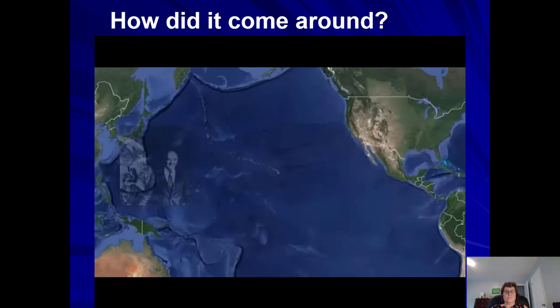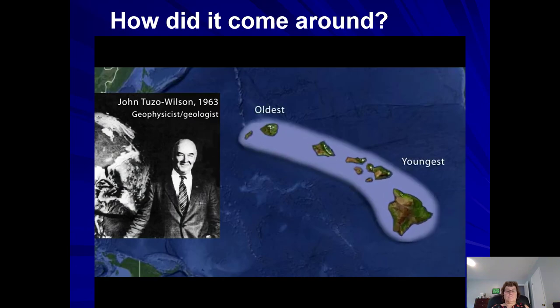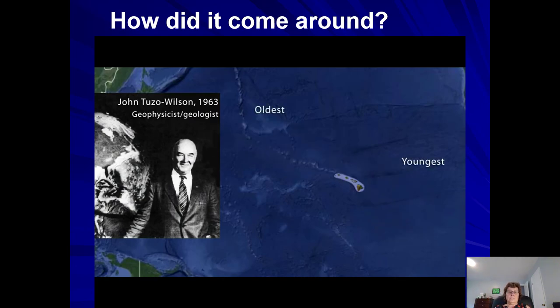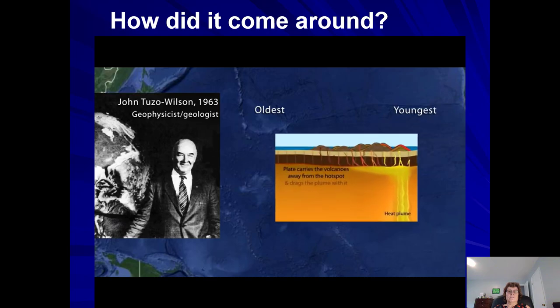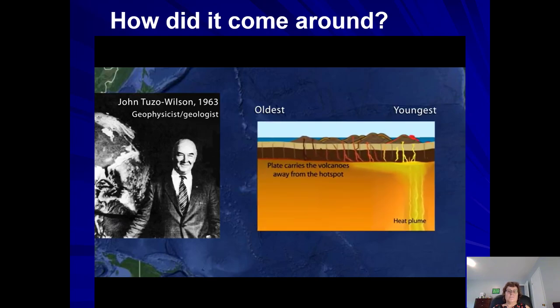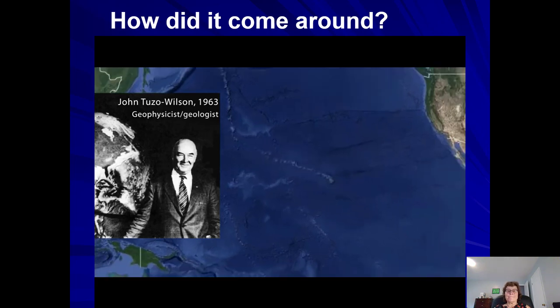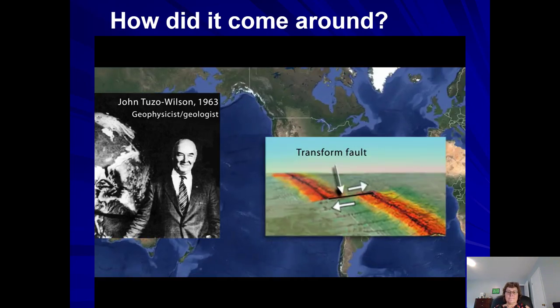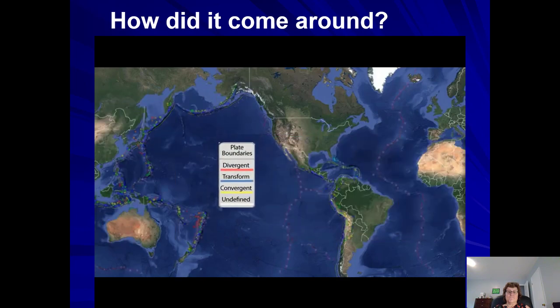While pondering the mystery of how volcanoes, such as the Hawaiian Island Chain, could be so far from spreading ridges or subduction zones, Tuzo Wilson proposed the plates moved over hot spots. Following this breakthrough with the discovery that ocean ridges were connected with transform faults.